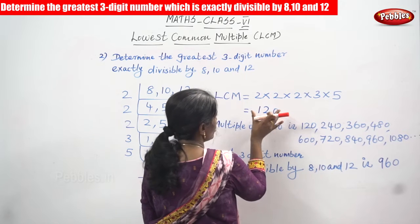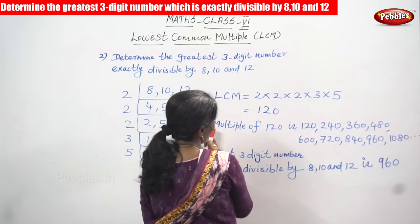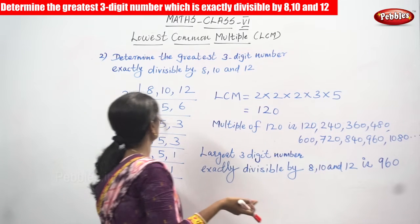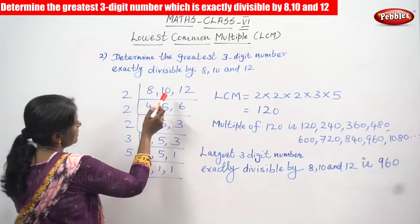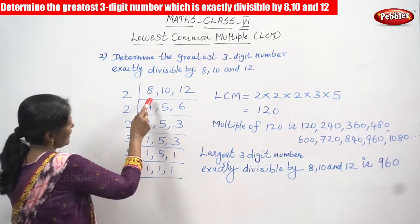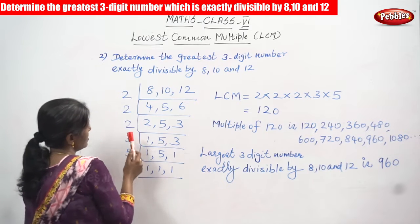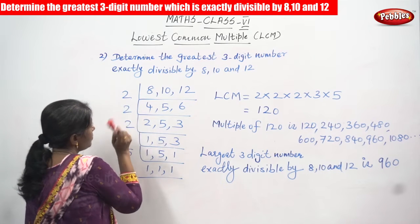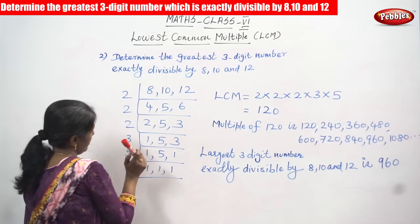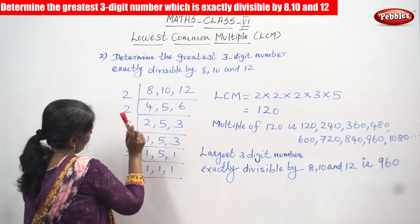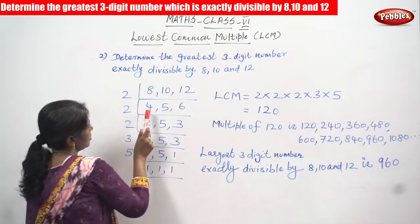After finding the LCM, we have to write its multiples, and then find the greatest three-digit number. Let's start. For 8, 10, and 12, we find a common divisor. 8 is divided by 2, 10 is also divided by 2, and 12 is also divided by 2. So we get 4, 5, and 6 respectively.